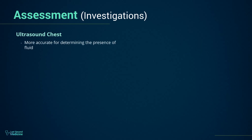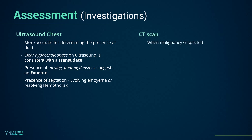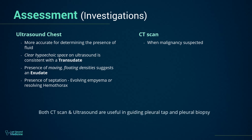Ultrasound is more accurate than plain chest X-rays for determining the presence of fluid, and is especially useful in the patient who is bedridden and unable to stand for a chest X-ray. A clear hypoechoic space on ultrasound is consistent with a transudate, and the presence of moving floating density suggests an exudate. The presence of septation most likely indicates an evolving empyema or resolving hemothorax. CT scanning is indicated where malignant disease is suspected. Both CT scan and ultrasound are also useful in guiding pleural tap and pleural biopsy.